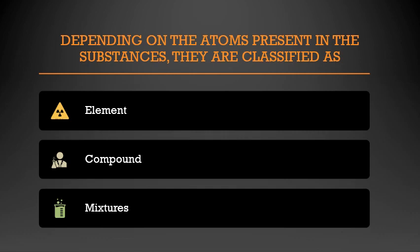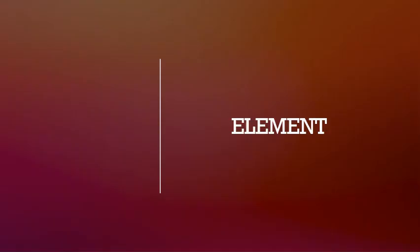All atoms have the same properties. Some atoms easily combine with others and form different substances. Depending on the atoms present in the substance, they are classified as element, compound and mixture. The main difference between element, compound and mixture is the type of atoms present in each kind of substance.